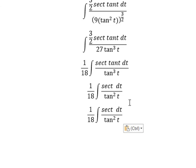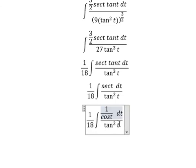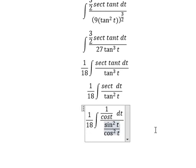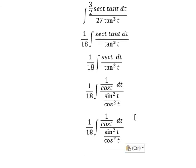So sec of t, we change by 1 over cos t. Tan t square, we change cos t square over sin t square.